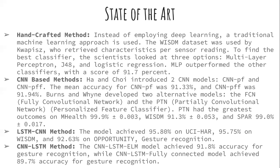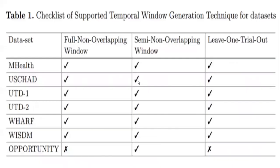Regarding CNN and LSTM models, here is the checklist of supported temporal window generation techniques for each dataset. The datasets — M-Health, USC-HD, UTD1, UTD2, WAF, Wisdom, and Opportunity — are listed. Most datasets support the majority of window methods. The only exception is that Opportunity does not support the full non-overlapping window and leave-one-trial-out methods.